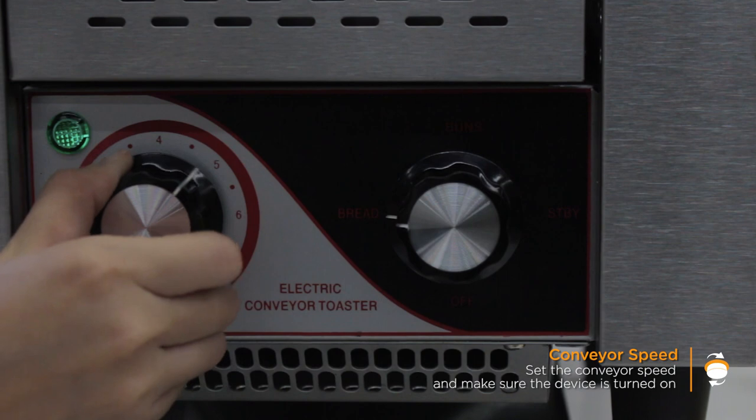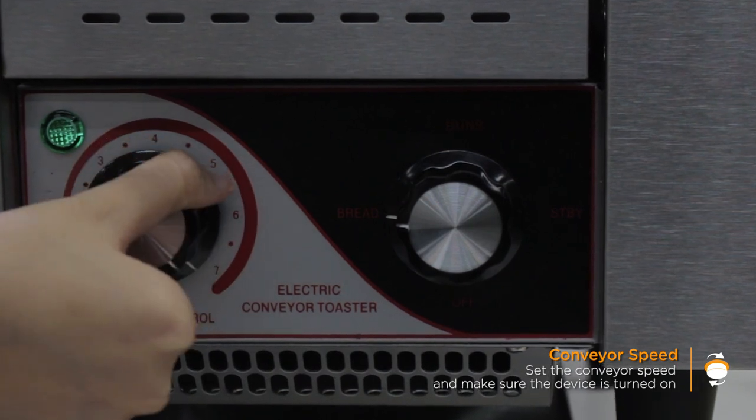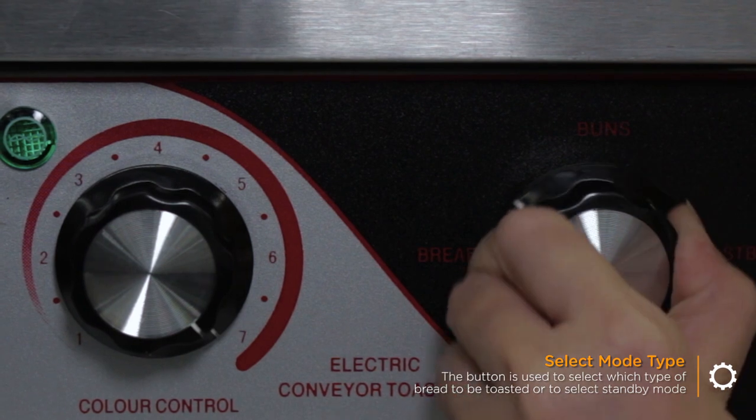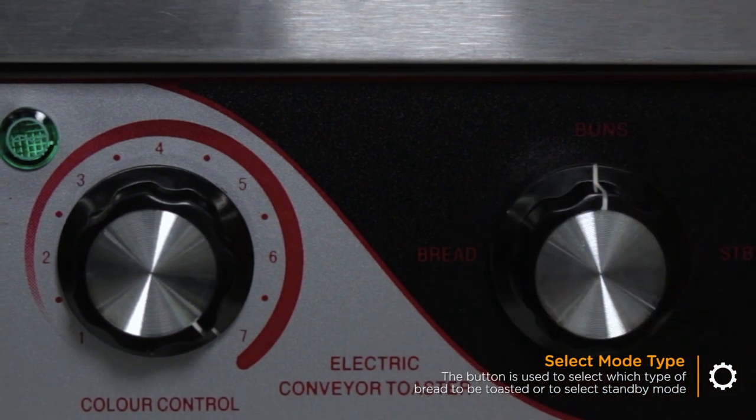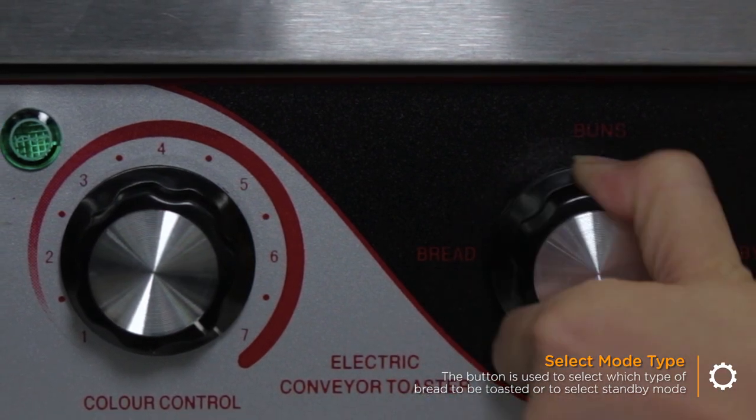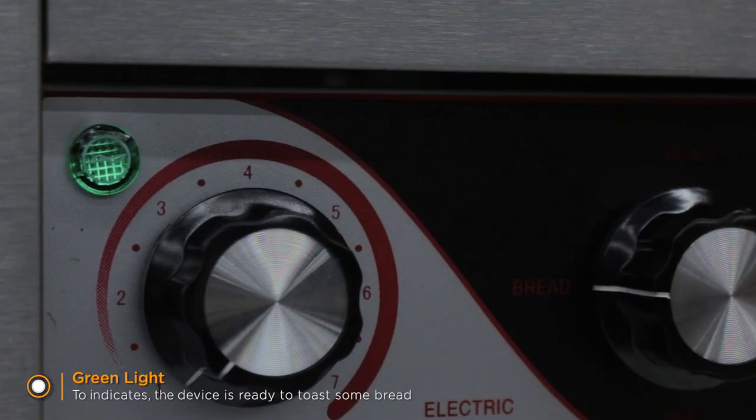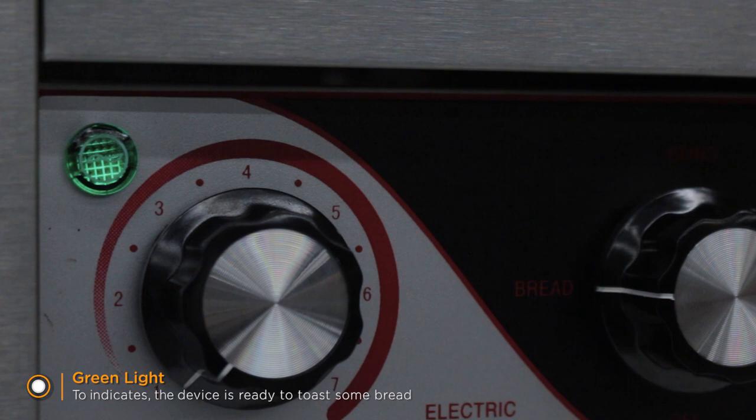Set the conveyor speed and make sure the device is turned on. This button is used to select which type of bread to be toasted or to select standby mode. The green light indicates that the device is ready to toast some bread.